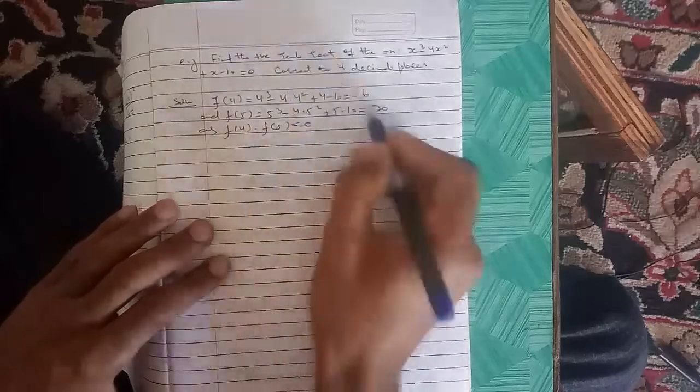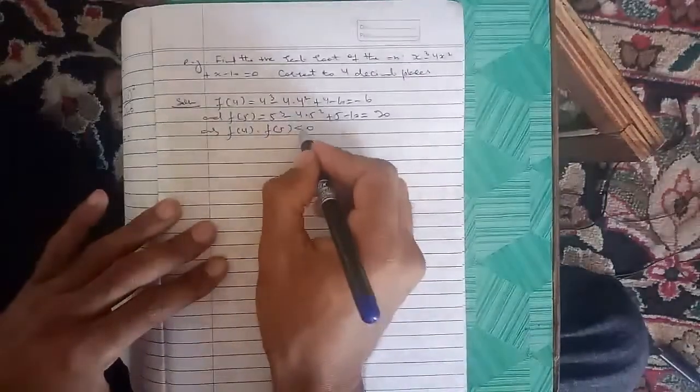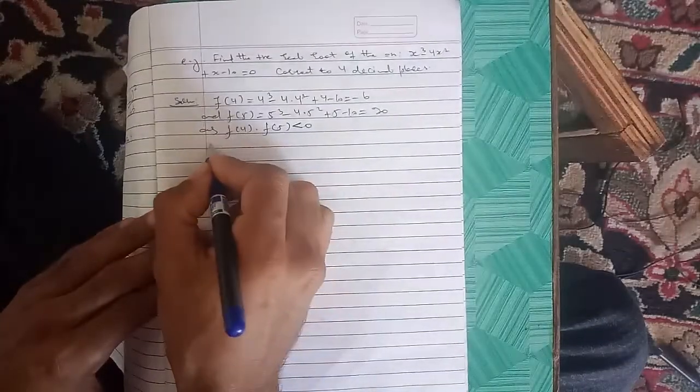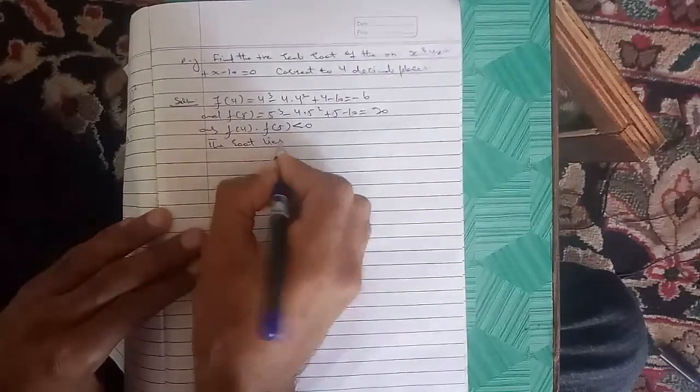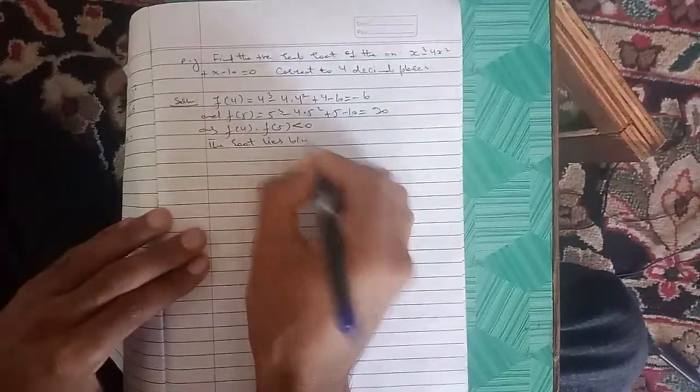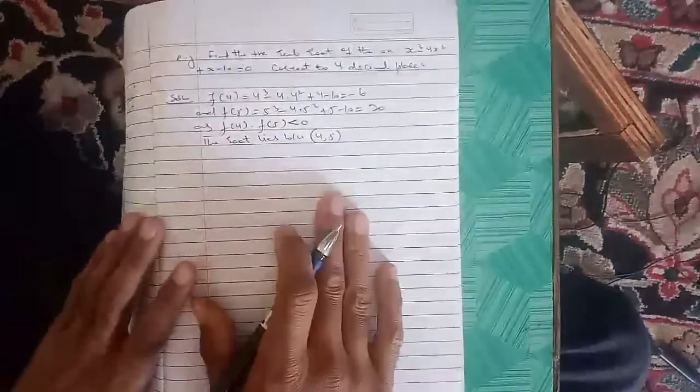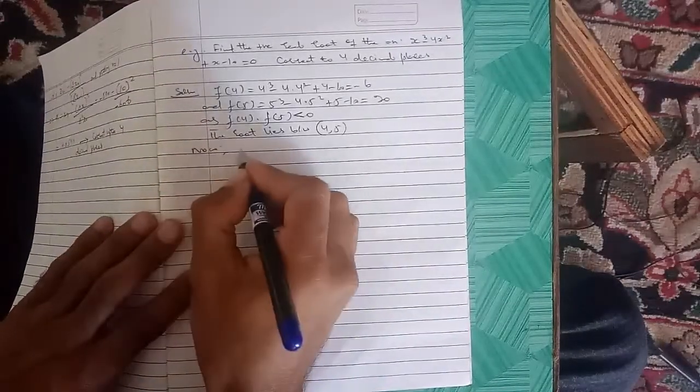As f(4) times f(5) is less than 0 (i.e., -6 × 20 < 0), therefore f(4) and f(5) are of opposite sign, so the root lies between 4 and 5.